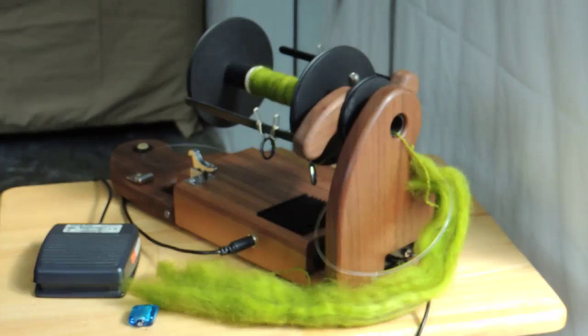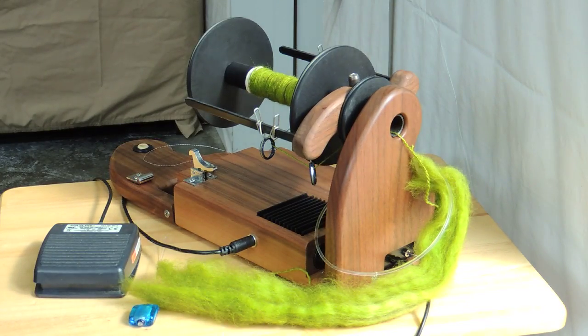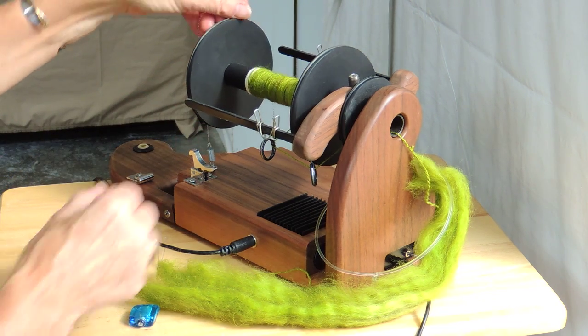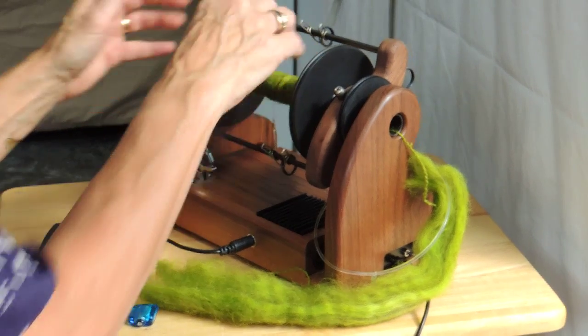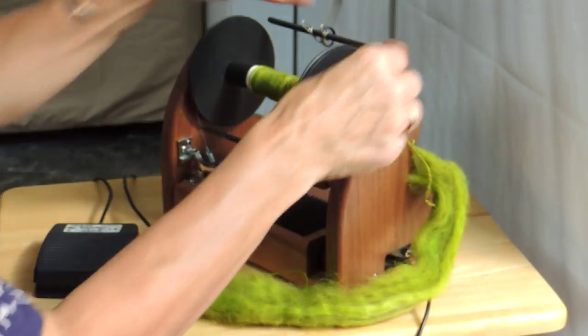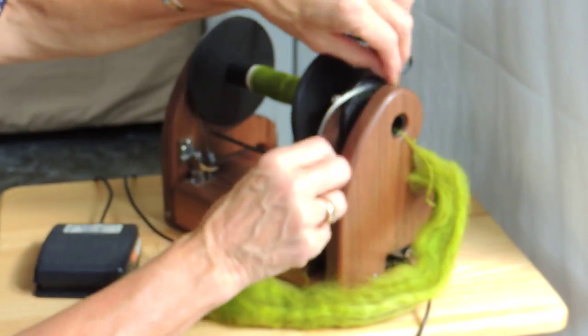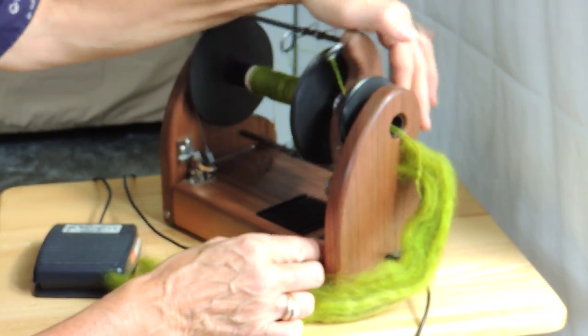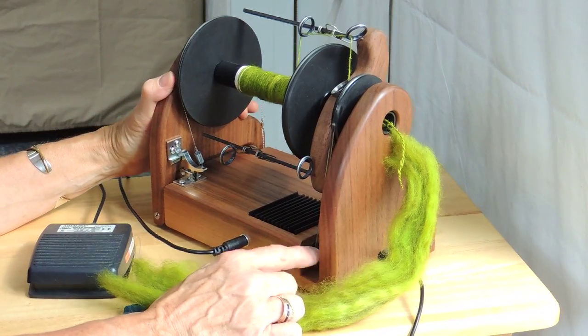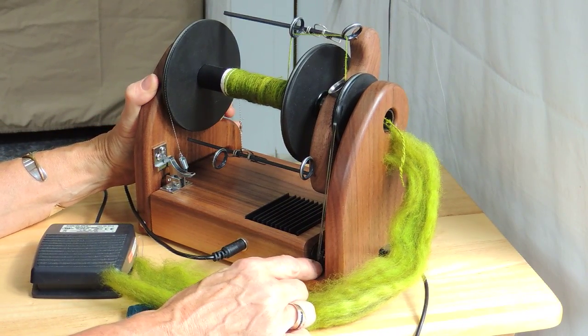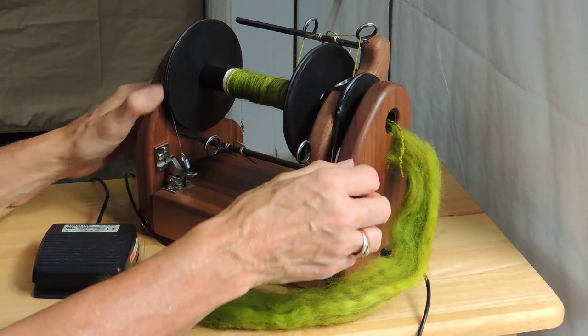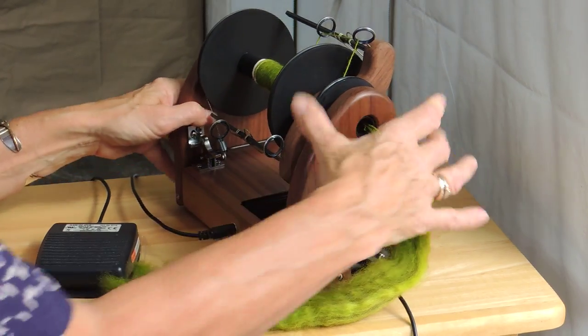So again I just slide this flyer off, slide this one back on and replace my brake band on the bobbin and then just close the door remembering to put the drive band back on as well. The drive band is attached down here to the motor sheave and then up to the flyer sheave or whorl.